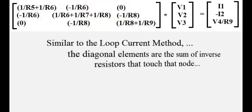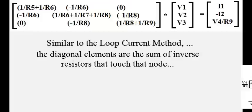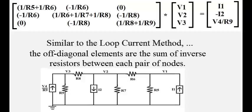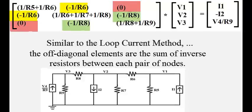The diagonal elements are the sum of the inverse resistors that touch that node. The off-diagonal elements are the sum of the inverse resistors between each pair of nodes.